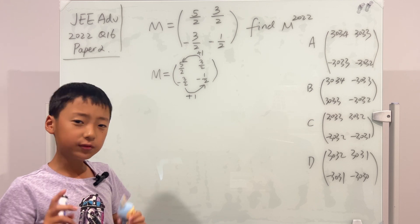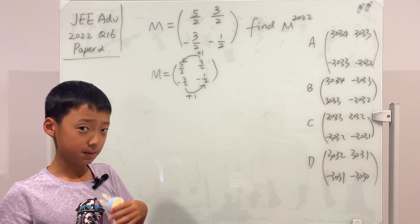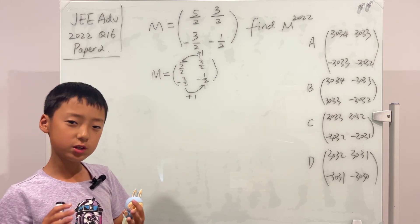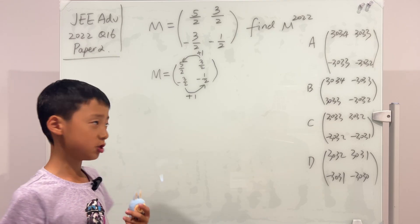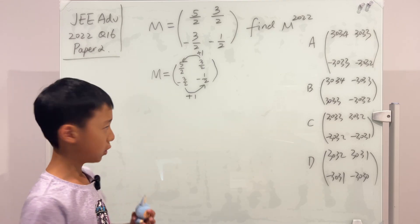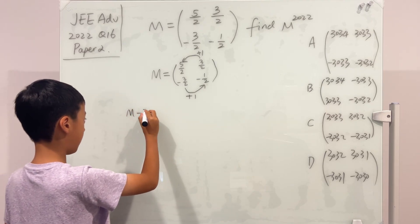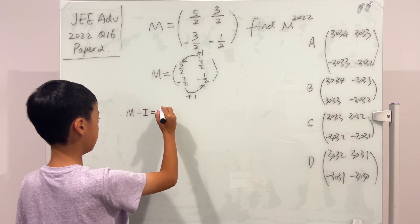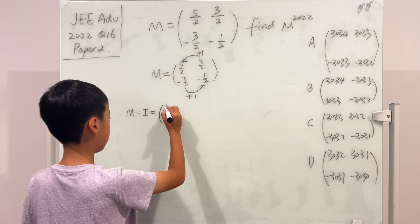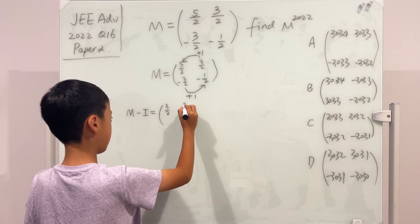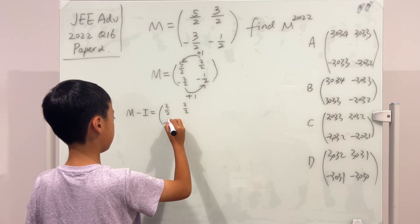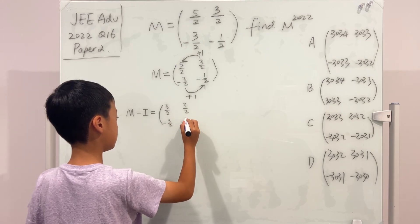Well, if there is one identity matrix hidden in here, then why don't we try to subtract this identity matrix from M, okay? So we have M minus I is equal to 3 over 2, 3 over 2, negative 3 over 2, negative 3 over 2.